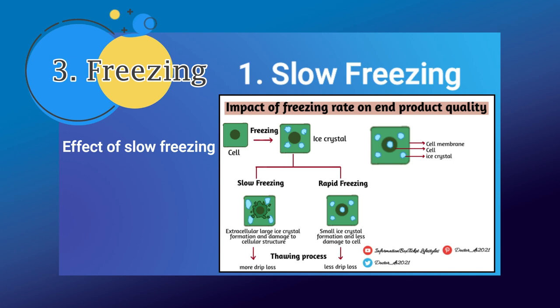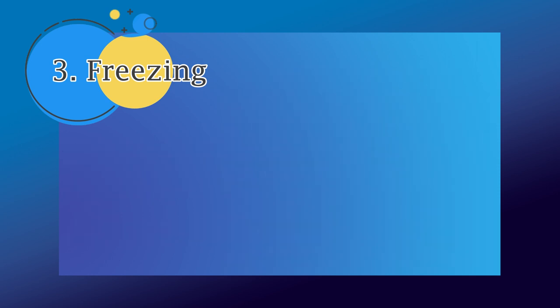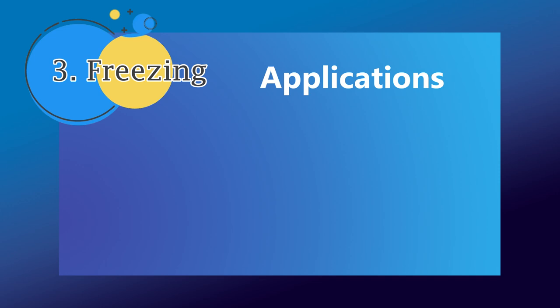Regarding the effects of slow freezing: cells may burst if the freezing rate is too slow, releasing nutrients that drip throughout the thawing process, reducing the food's organoleptic and nutritional value. The quality of food is inversely proportional to the size of ice crystals.